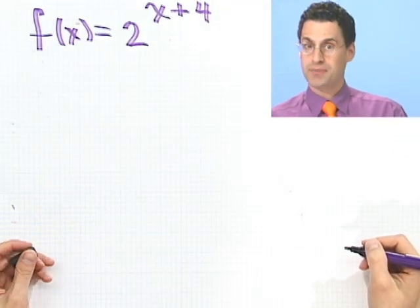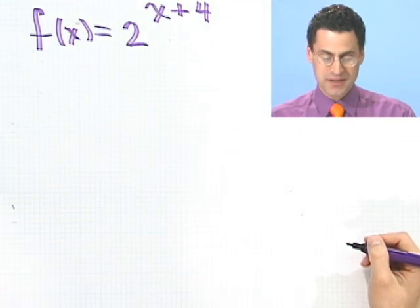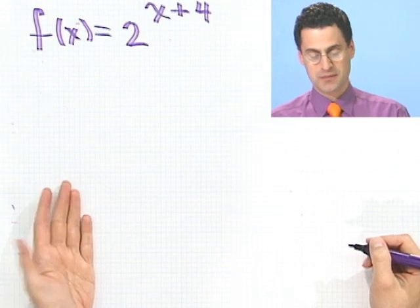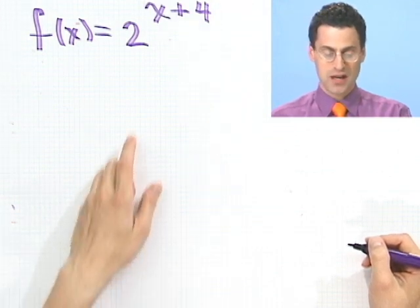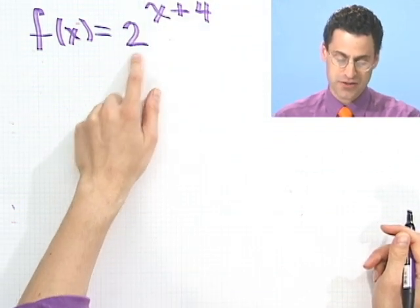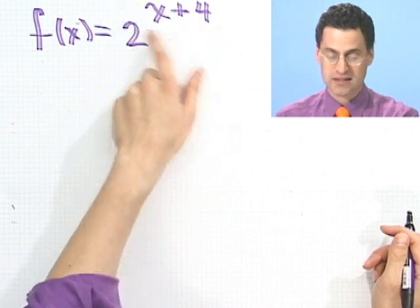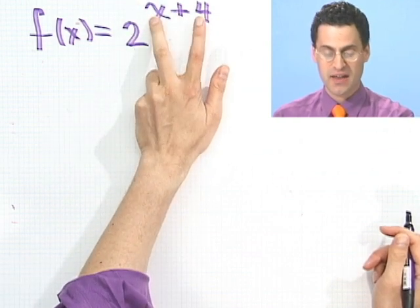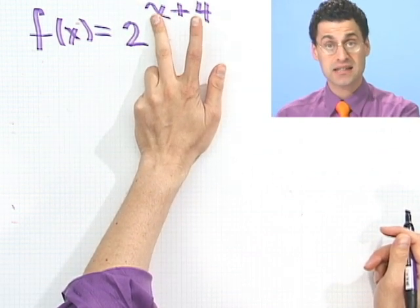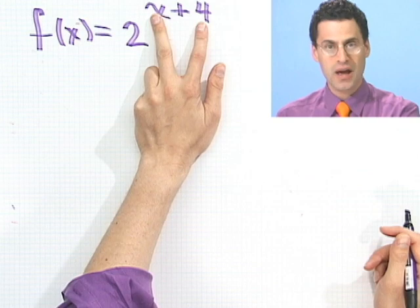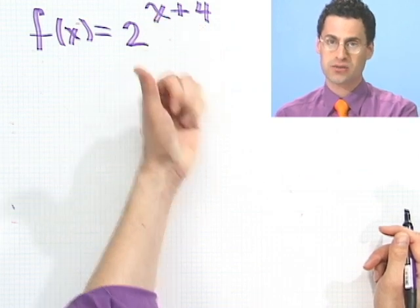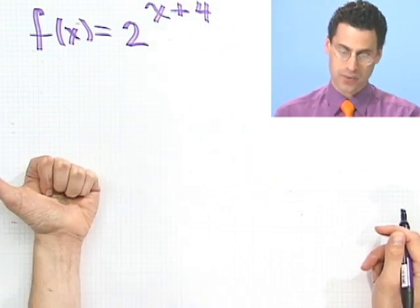How would I do that? Well, there are actually two ways of thinking about this. One way is to notice that this is just basically 2 to the x, but instead of x I have x plus 4. So that's a shift in the x — add to x, go west. So it should be a shift this way.